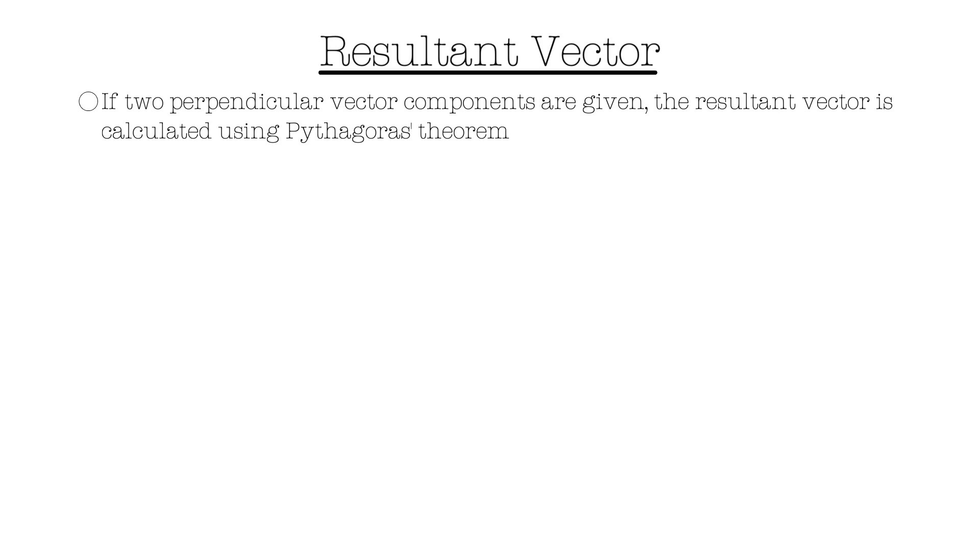Let's move on to calculating the resultant vector. If two perpendicular vector components are given, the resultant vector is calculated using Pythagoras' theorem.